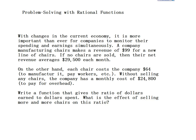With changes in the current economy, it is more important than ever for companies to monitor their spending and earnings simultaneously. Suppose we have a company that manufactures chairs. For each chair, they make a revenue of $99 for this new line. Revenue basically means that's just what they get paid when a customer purchases one. If no chairs are sold, then their net revenue average is $29,500 each month.